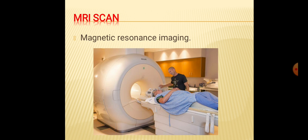MRI Scan — Magnetic Resonance Imaging: An MRI is a type of scan that uses strong magnetic fields and radio waves to produce detailed images of the inside of the body. An MRI scanner is a large tube containing powerful magnets, inside which a person lies during the scan. It is useful to diagnose a variety of conditions from torn ligaments to tumors, and is very useful for examining the brain and spinal cord.